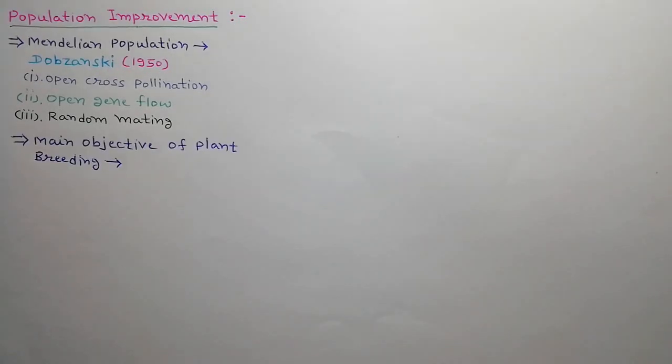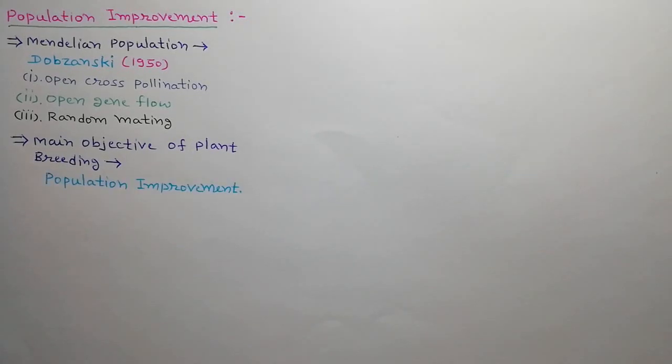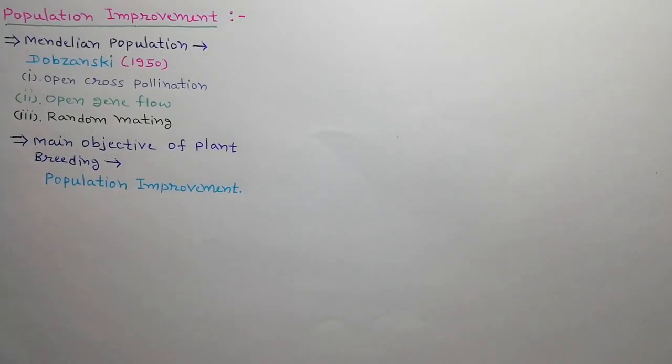What is the main objective of plant breeding? The main objective of plant breeding is population improvement. For this purpose, frequency of beneficial and adapted genes is to be increased in population.